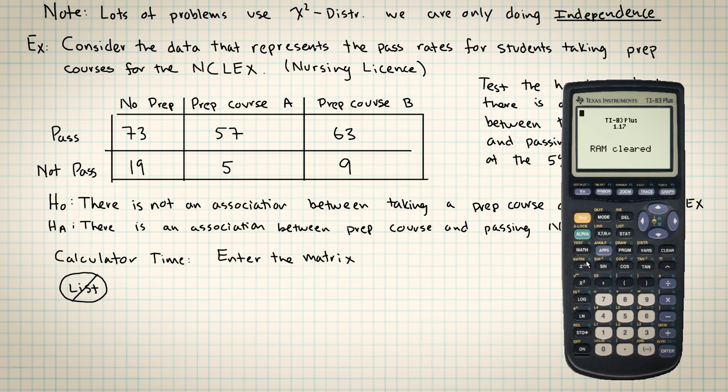The way that you get to the matrix is you can see it's right above the x inverse button in yellow. There's a matrix button. Let's open this matrix button, and this is where you can select the matrix that you want to talk about, and you can also do math with them. The first thing that you need to do is edit the matrix. Here at the top is where you put in the dimensions of the matrix. This is a two by three matrix, and then you'll end up with two rows and three columns. I'm just going to put the data in as I see it.